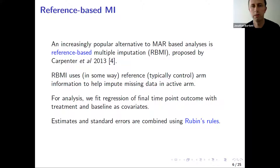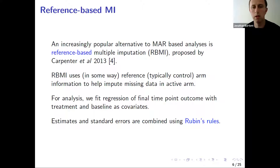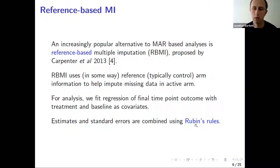An increasingly popular alternative in this context to an MAR-based analysis is to use reference-based multiple imputation, as first proposed by Carpenter et al. in 2013. Reference-based imputation methods use, in different ways depending on the variant, the reference group — typically the control group — to help impute the missing data in patients randomized to the active treatment group. The analysis model is a final regression model of the outcome at the final time point with treatment and baseline as covariates, and the estimates and standard errors from those regression models fitted to each of the imputed data sets are combined using Rubin's rules.